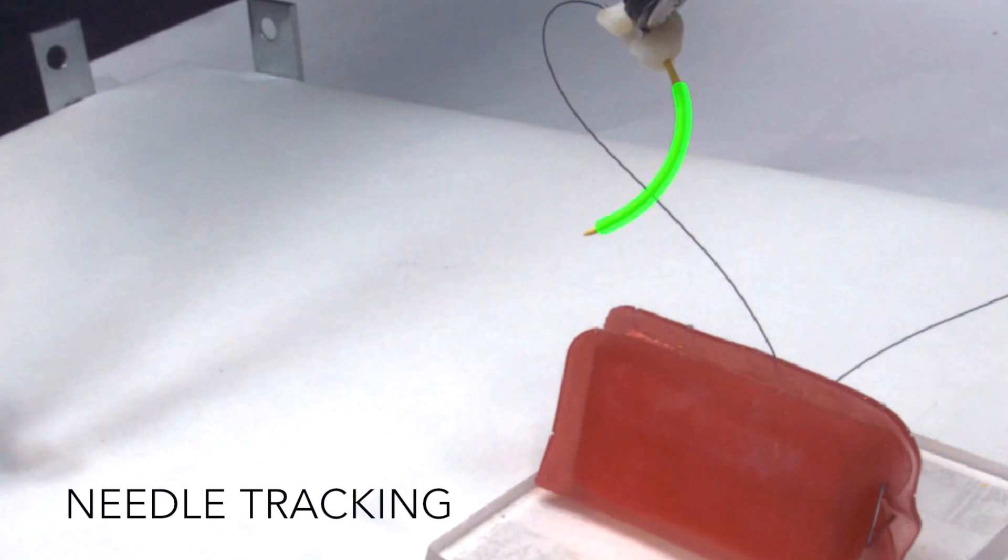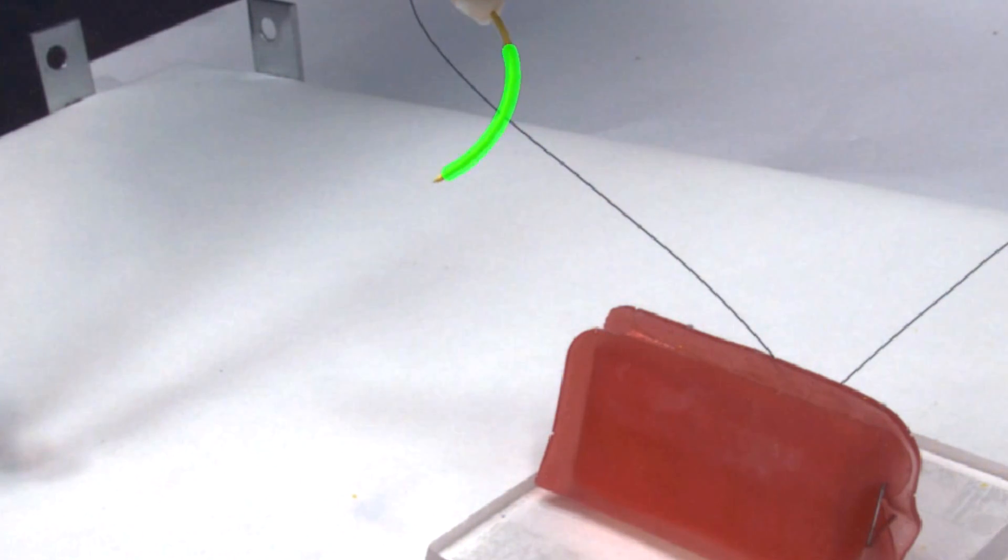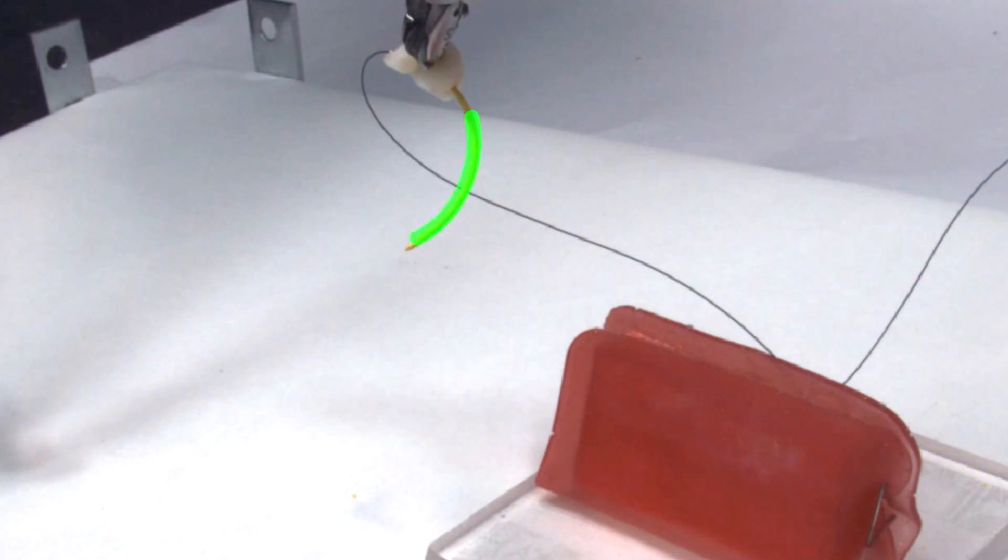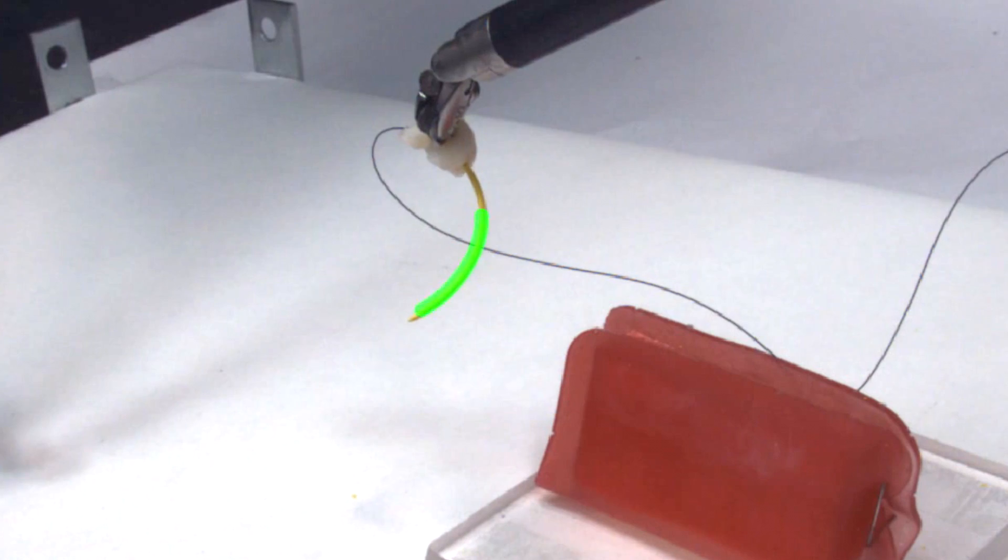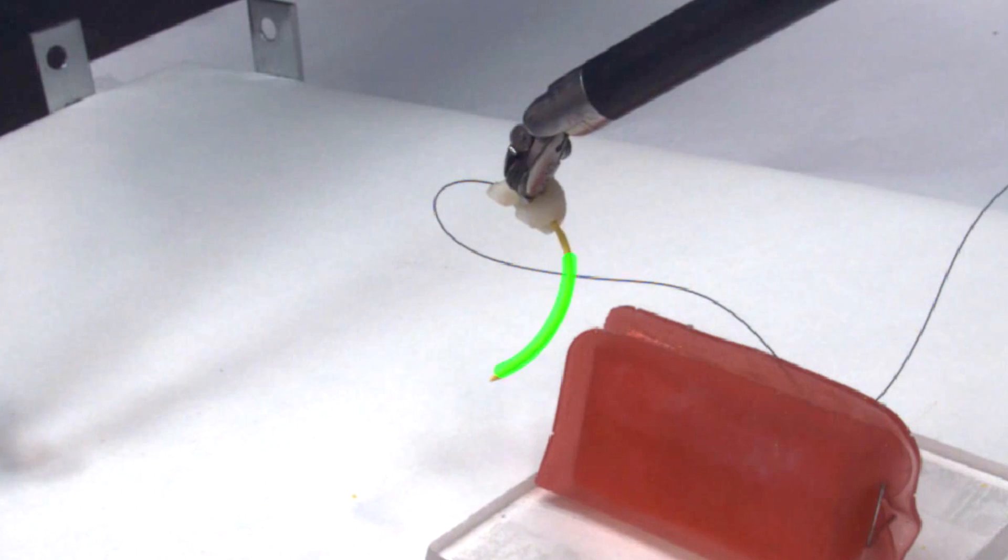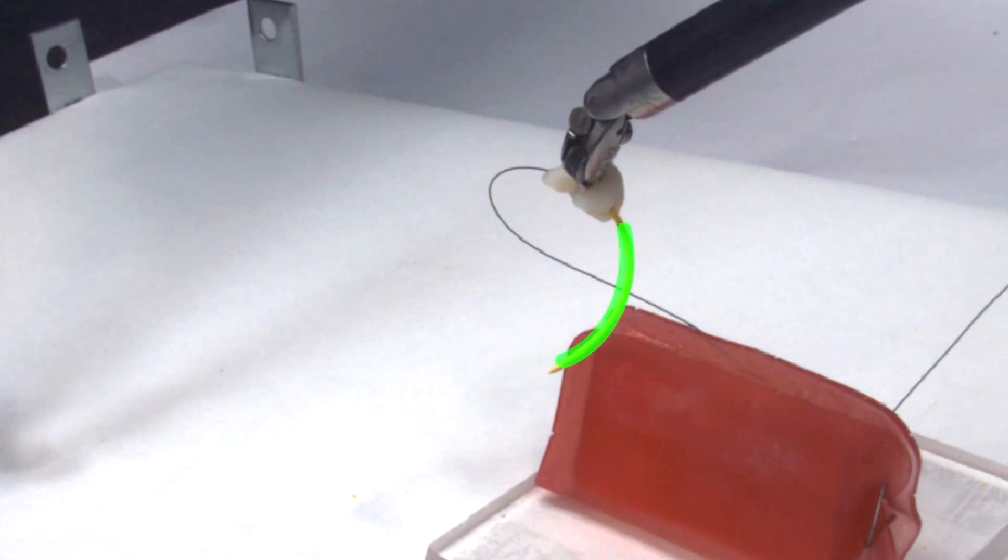We have also developed a needle tracking system to estimate the needle pose. Here we see a 3D pose estimate of the needle overlaid onto the camera image. The system uses robust point set registration to fit elliptical curves to a color-based segmentation of the needle and estimates its depth using stereo camera correspondences.